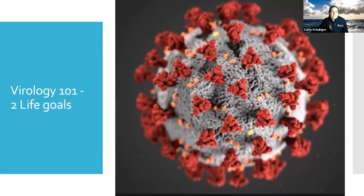You've probably seen this photo quite often this year. This is COVID-19. It is a member of the big and common family of coronavirus. Viruses, like all living organisms, have two life goals. The first one is to survive, and the second one is to produce progeny.